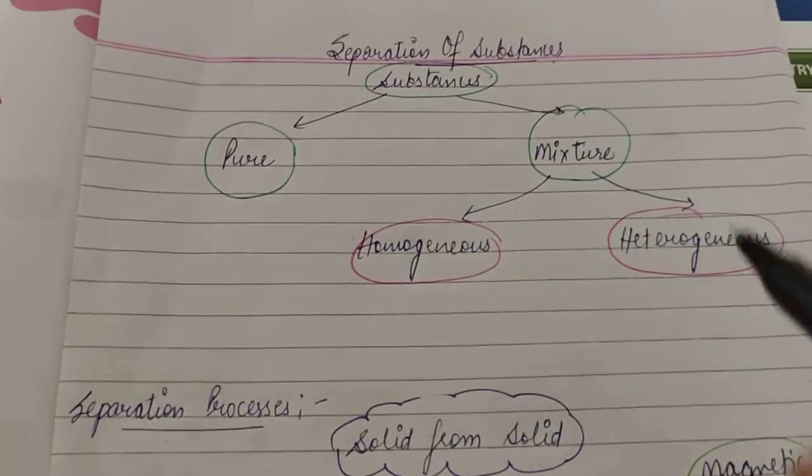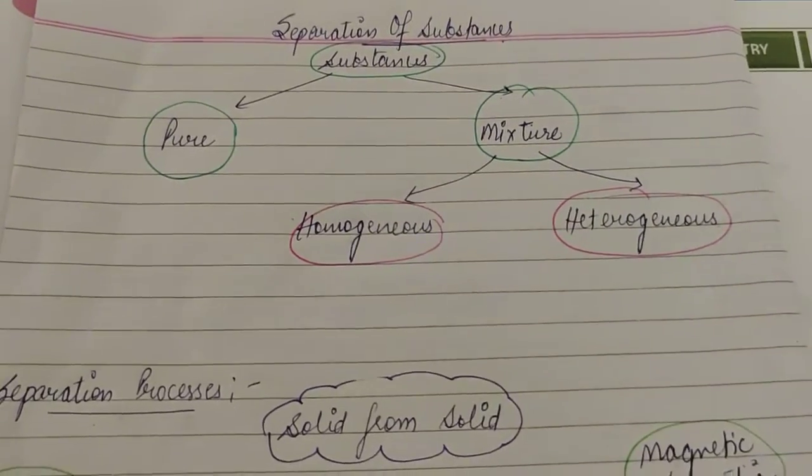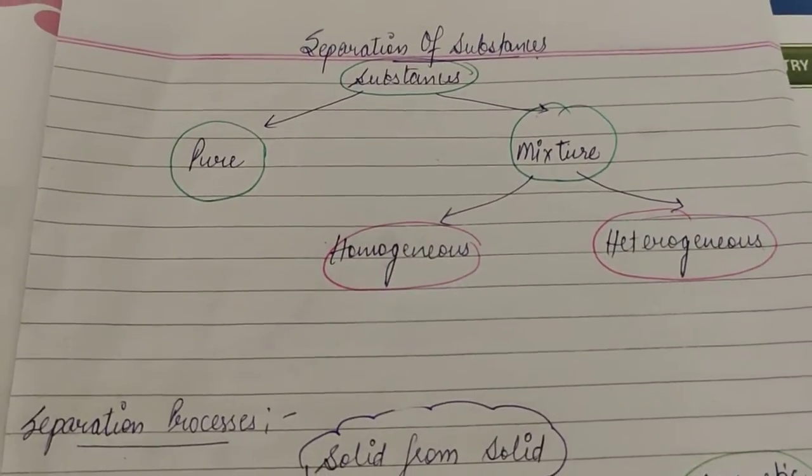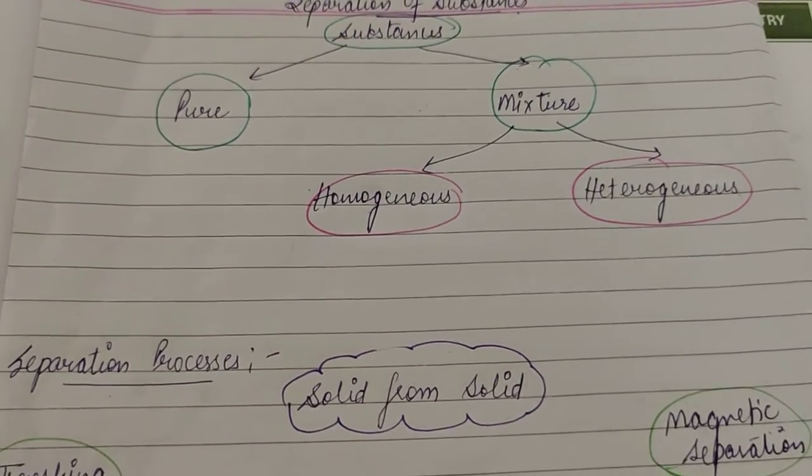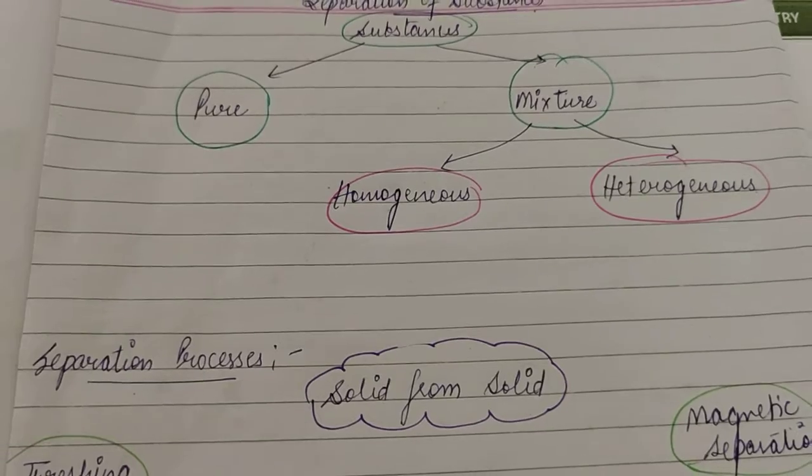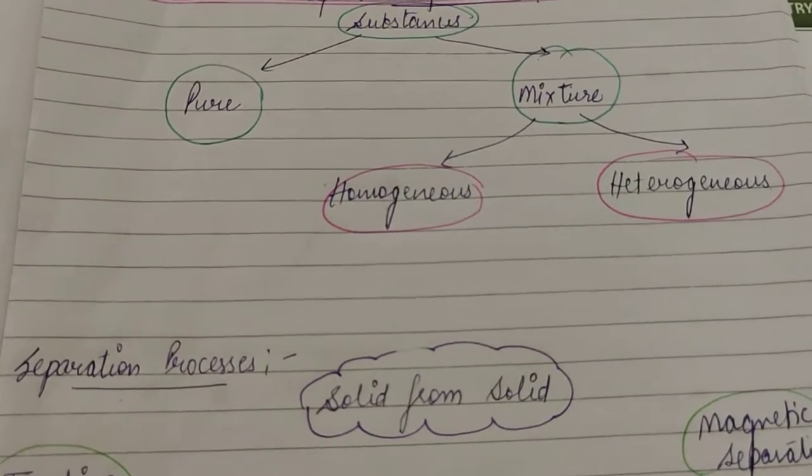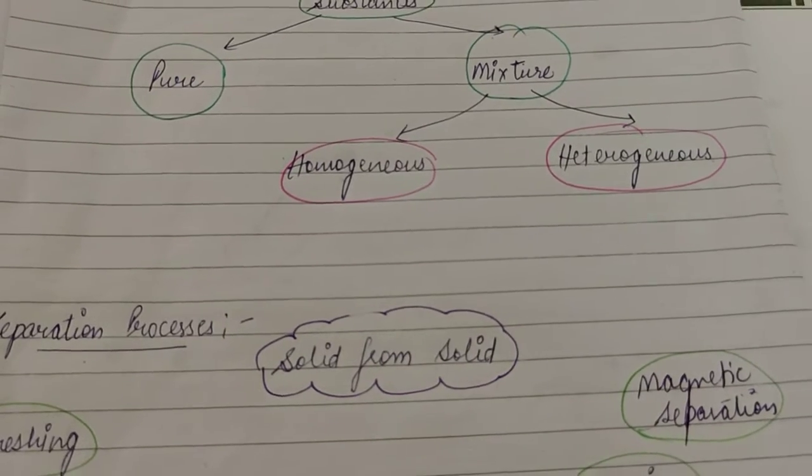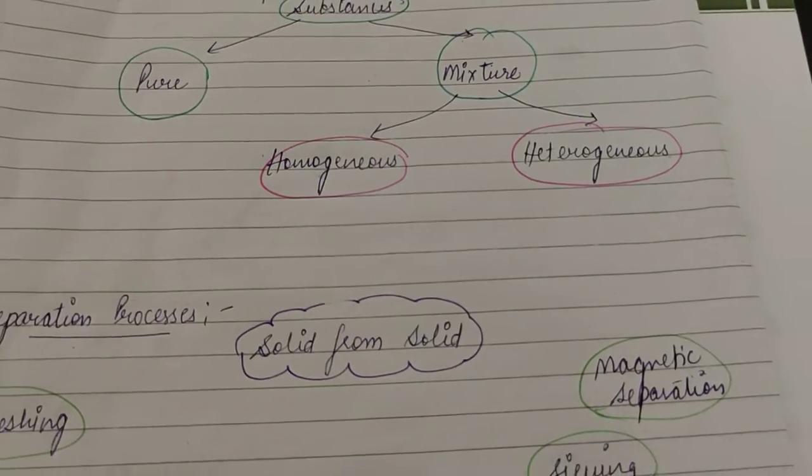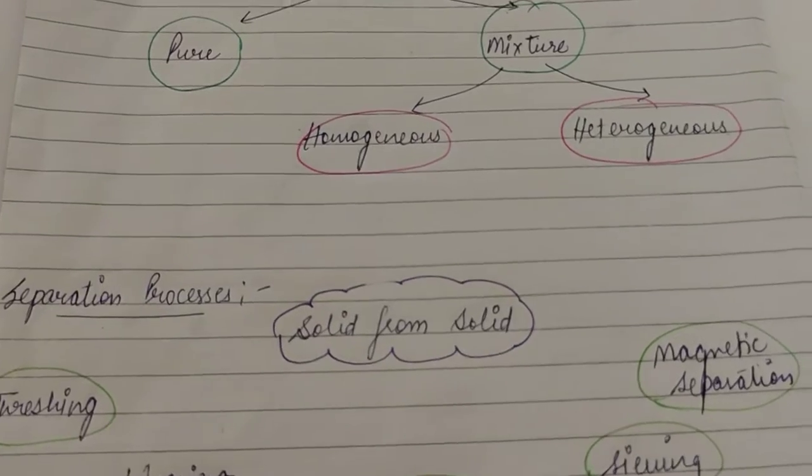Now we need separation. Why do we separate? Why do we need separation processes? Because sometimes there are some impurities present which are harmful for us, or sometimes we need just a pure substance and we don't want any other substance to be present with it. So for that, separation substances are a must.